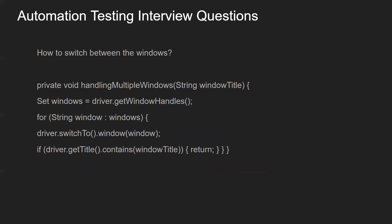How will you switch between windows? If there are multiple windows, you can explain the code logic. Sometimes interviewers ask for end-to-end programming, and sometimes just high-level logic so they can assess whether the candidate understands the approach. You can use a for loop with driver.switchTo().window(), combined with an if condition checking the window title — if this particular window title matches, perform a certain action, otherwise handle another title.